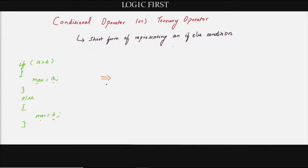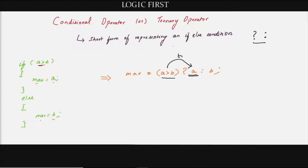This can be replaced by a simple one-line code. Here, the expression we are checking is a greater than b. After placing the condition you give a question mark. If a is greater than b we assign a; if not we assign b to max. We use a question mark and a colon to represent the conditional operator. If the expression is true, the value after the question mark is evaluated; if false, the value after the colon is evaluated.